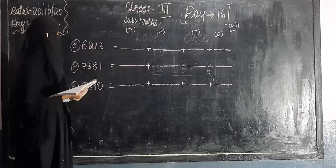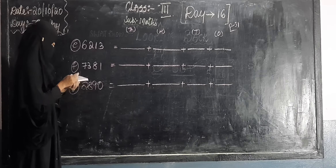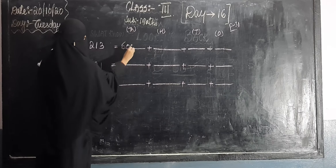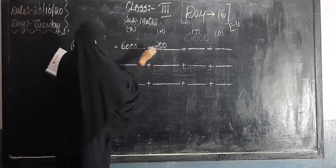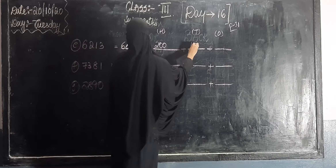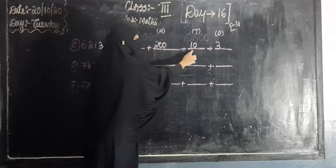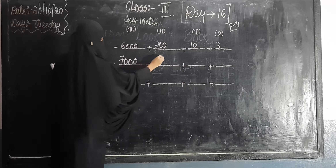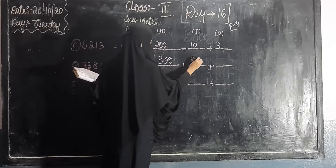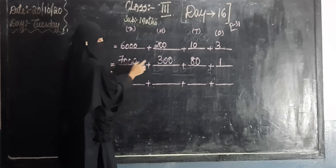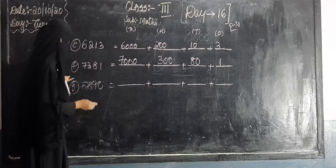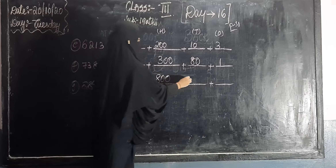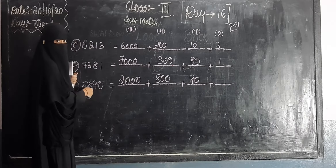We have just finished questions A to D. Now E to H. Here: 6213. So, 6 into 1000 — six thousand; 2 into 100 — two hundred; 1 into 10 — ten; and 3 ones. So 6213. Question F: 7000 plus 300 plus 80 plus 1 — the answer is 7381. Next: 2890. Because there is nothing in the ones place — so we have 90 in tens. Write in your reader only.